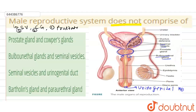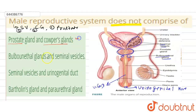Now check the options. The first option states prostate gland and Cowper's gland — yes, these are part of the male reproductive system. These are male reproductive accessory glands which create secretions that constitute semen, so this is true and not the answer. The next option is bulbourethral gland, which is another name for Cowper's gland, and seminal vesicles — these are all male accessory reproductive glands which secure the secretion of semen, so this is also true and not the answer.